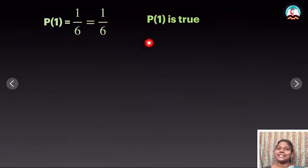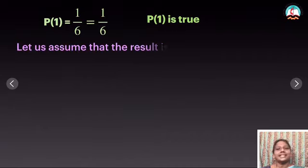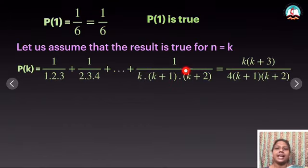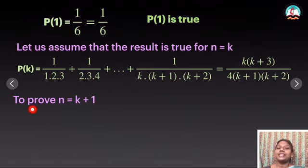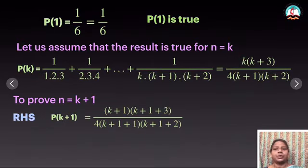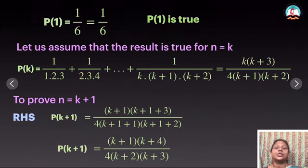Then what is the second step? I proved n=1 is true, so now I have to assume. Let us assume the result is true for n equal to k. In the place of n I substitute k, getting P(k). Then I have to prove the third step: n equal to k+1. For n equal to k+1 the rule is to take the RHS first. P(k+1) on RHS equals: substitute k by k+1, giving (k+1)(k+1+3) / [4(k+1+1)(k+1+2)]. Simplifying gives the RHS value.